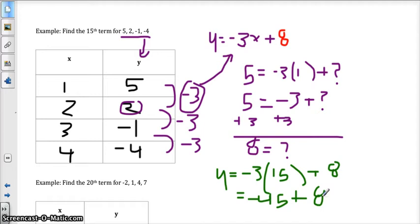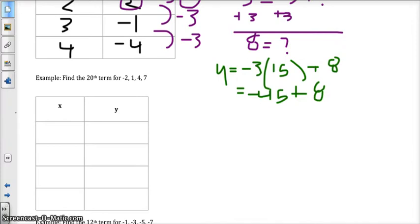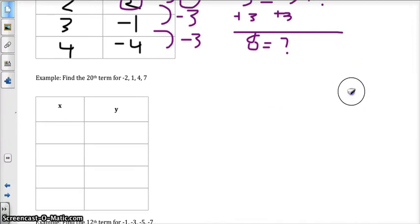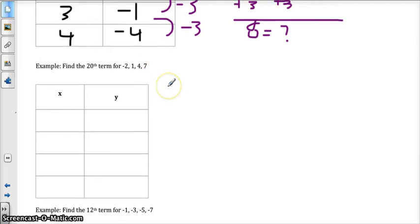Let's take a look at another example. I'll give myself some more room. Find the 20th term for negative 2, 1, 4, and 7. First term, negative 2. Second term, 1. Third term, 4. Fourth term, 7.